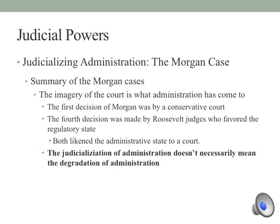What you're seeing in the Morgan cases is this process of judicialization — the imagery of the court, all of its trappings, is being imposed upon administrative agencies. Interestingly, the first decision was made by a conservative court, and by the fourth decision it was made by liberal judges who favored the regulatory state. The commonality is that both conservative and liberal courts likened the administrative state to a court. As Rohr argues, this doesn't necessarily mean the degradation of administration — in fact, it legitimizes administration because it upholds constitutional values.